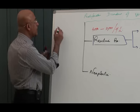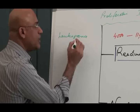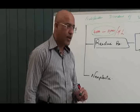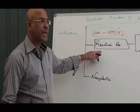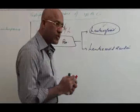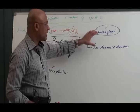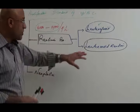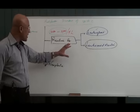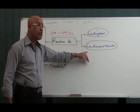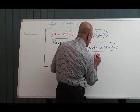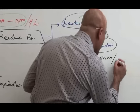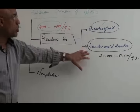If white blood cells in peripheral circulation are more than 11,000 but the proliferation is reactive, we call it leukocytosis. In leukemoid reaction, even though there is a reactive increase in white blood cells, this increase is very high — white blood cell count may reach somewhere between 40,000 to 50,000 per microliter.